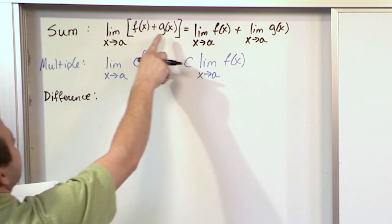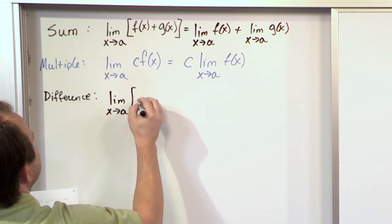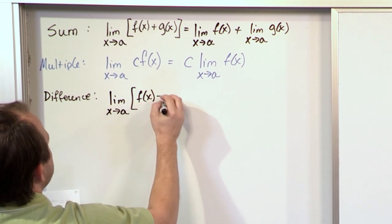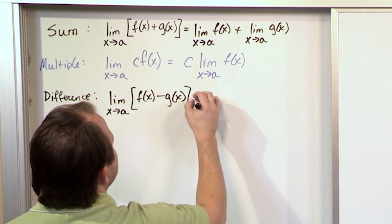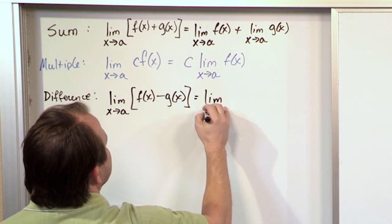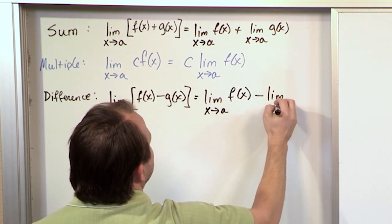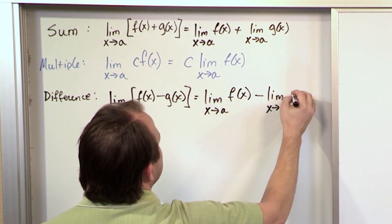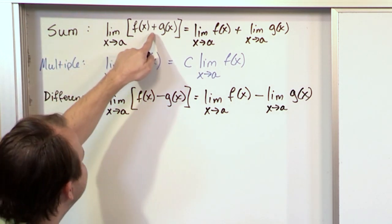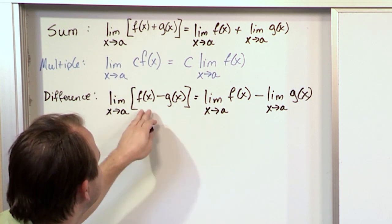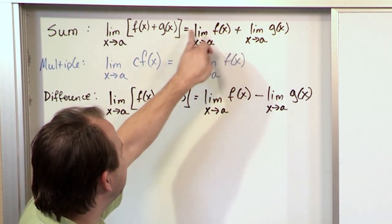So if you have a sum rule, what do you think is going to happen if I have the limit as x goes to a of the difference of two functions, f of x minus g of x? Just use your intuition. If the sum works like that, the difference is going to work the same way: the limit as x approaches a of f of x minus the limit as x approaches a of g of x. So basically, if you have two functions either added or subtracted, you take the limits of the individual functions and you keep the sign that was linking them in the beginning.